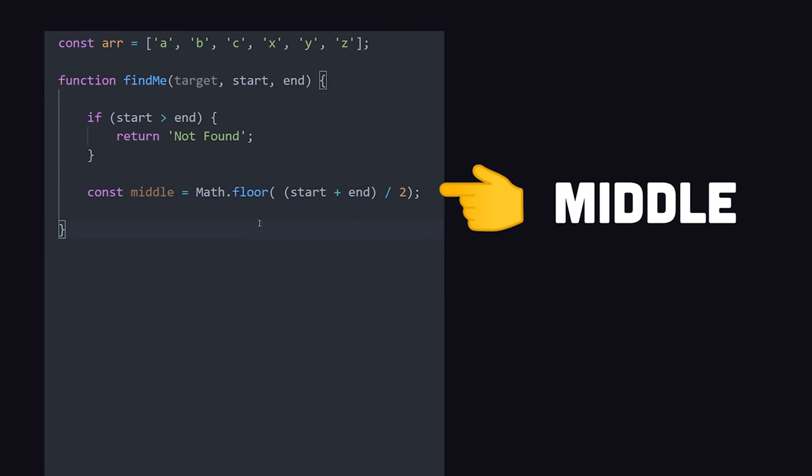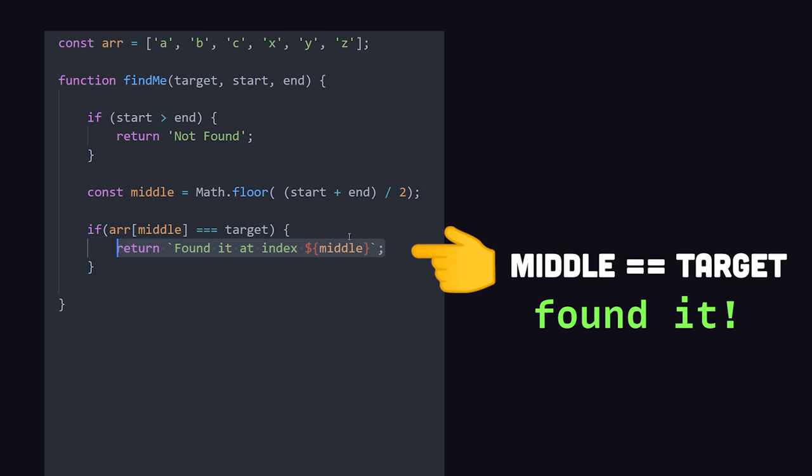From there, we compute the middle index, then we check to see if that middle index is equal to the target. At which point, we can return because we found the element we're looking for.